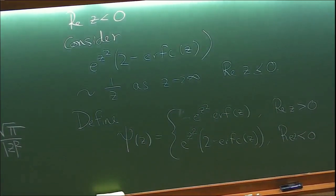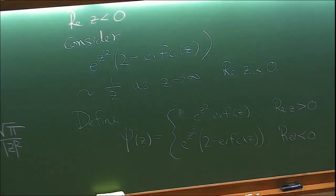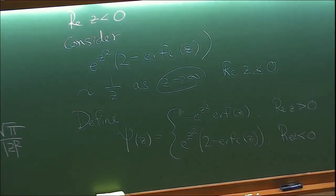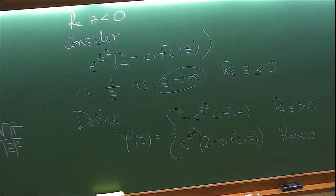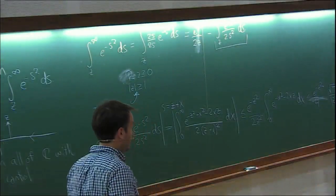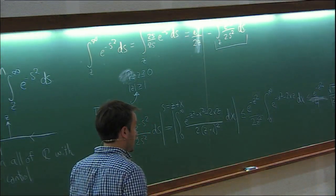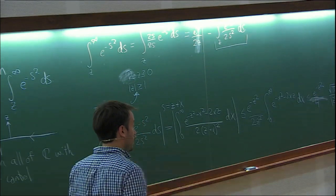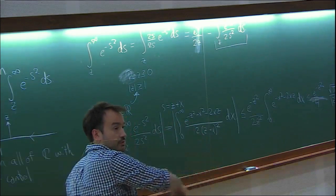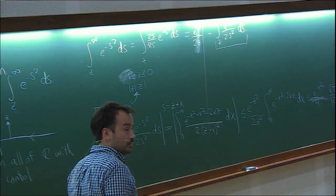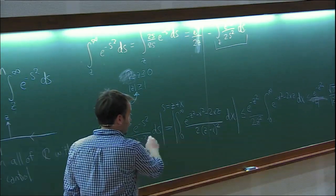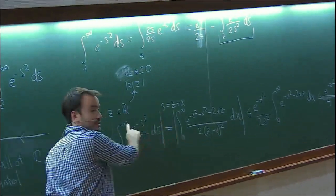So now I have a sectionally analytic function ψ. I used the integration by parts just to understand the large-z behavior. Now I'm going to list a bunch of properties for ψ, and this calculation is one of those important properties. I already know what happens at z = 0 because everything is analytic there.